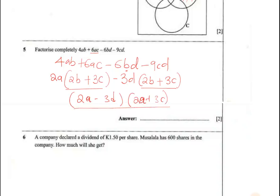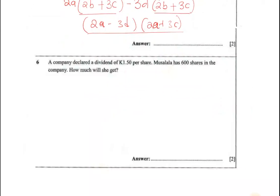Question 6: A company declared a dividend of £1.50 per share. Musalala has 600 shares in the company. How much will she get? So one share costs £1.50, and we have 600 shares - how much?